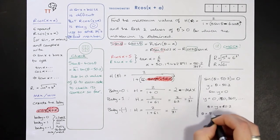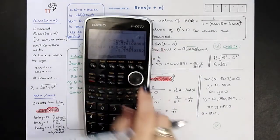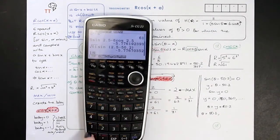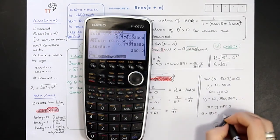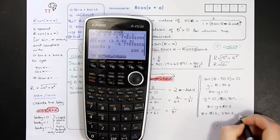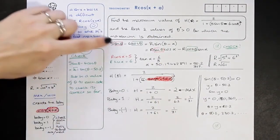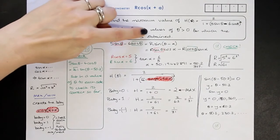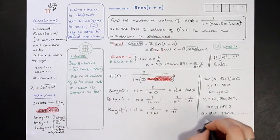So θ = 50.2°, or 180 + 50.2 = 230.2°, and so on. The question asked for the first two values of theta for which the maximum is obtained, and these are the first two: θ = 50.2° and θ = 230.2°.